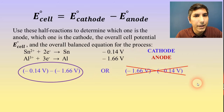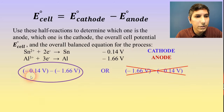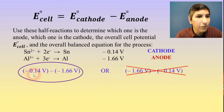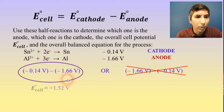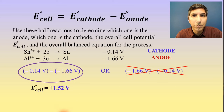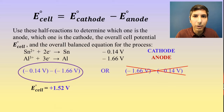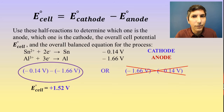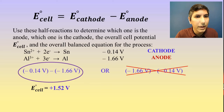So we've determined that. Now the overall cell potential is just the numerical value of this calculation. Negative 0.14 volts plus 1.66 volts gets us positive 1.52 volts. The E-cell for a galvanic cell has to be positive — if it's negative, you've done something wrong if it's a galvanic cell.